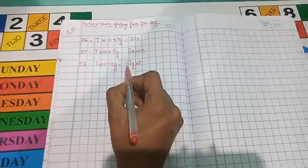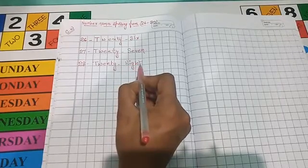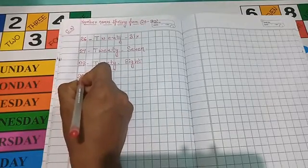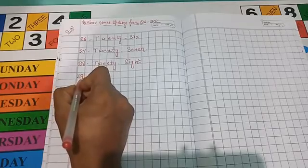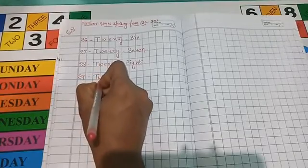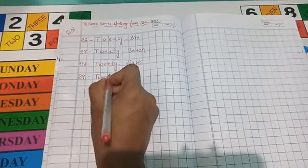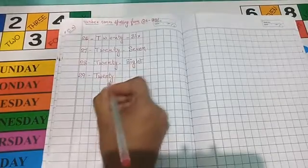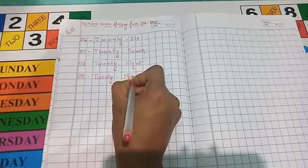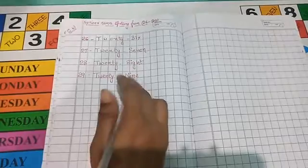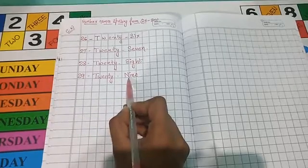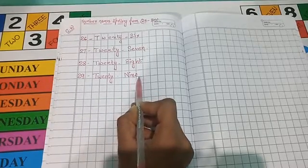Next, 29. The spelling of number 29 is T-W-E-N-T-Y, 29, N-I-N-E, 29. T-W-E-N-T-Y, 29, N-I-N-E, 29.